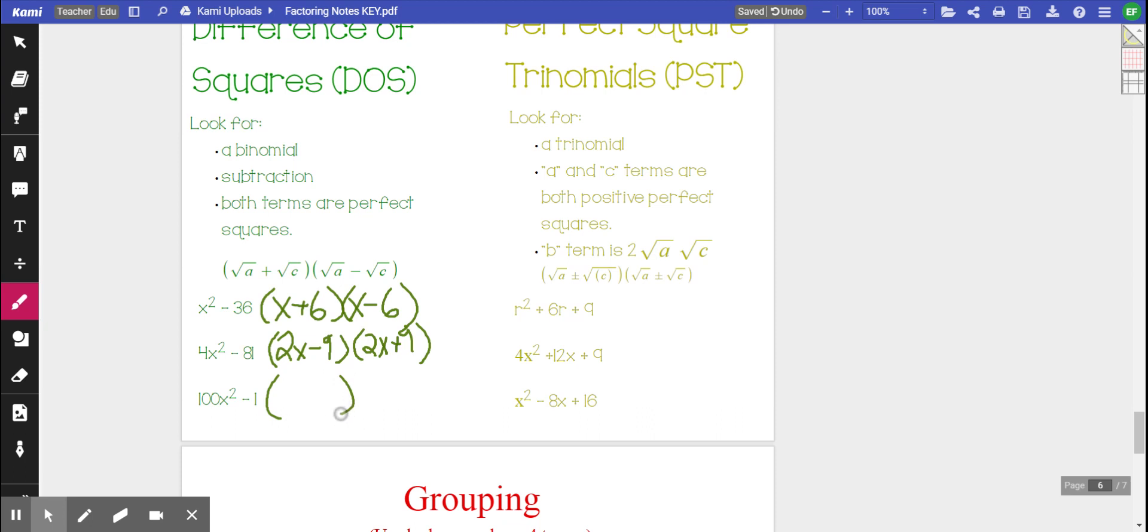Our last example here, 100x squared. Well, the square root of that is 10x. So that goes in my first spot. Square root of 1 is 1. And again, opposite signs. So one is a plus and one is a minus. And we're done. That's factoring by a difference of squares. So you just need to recognize your perfect squares and you should be good to go.